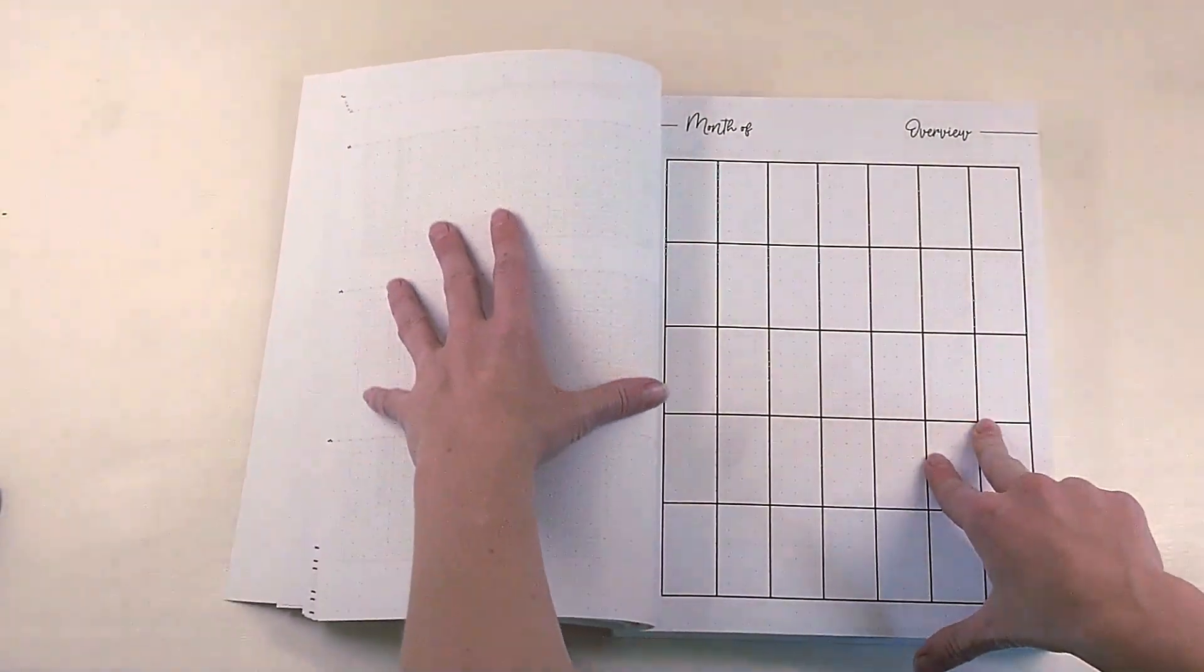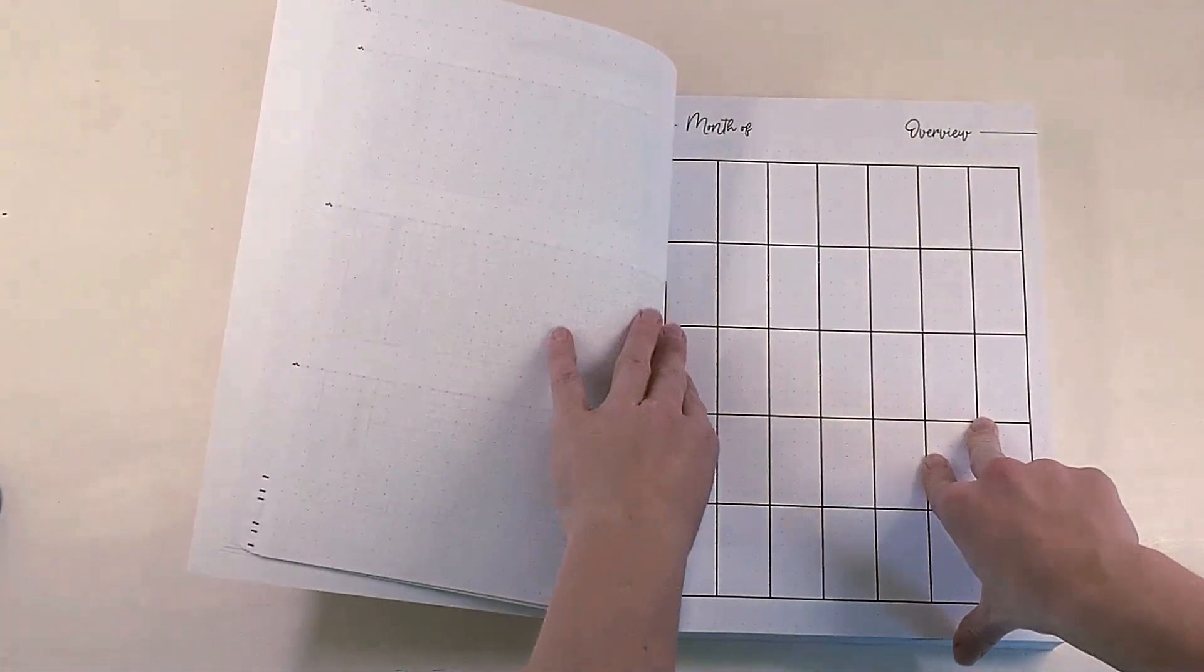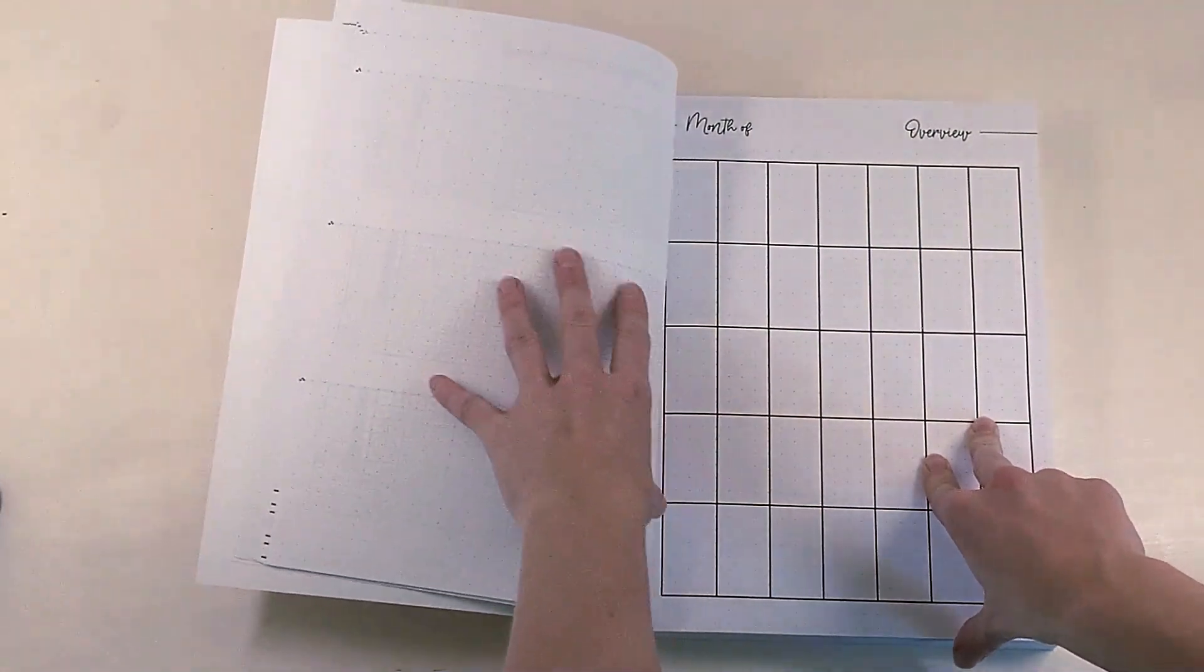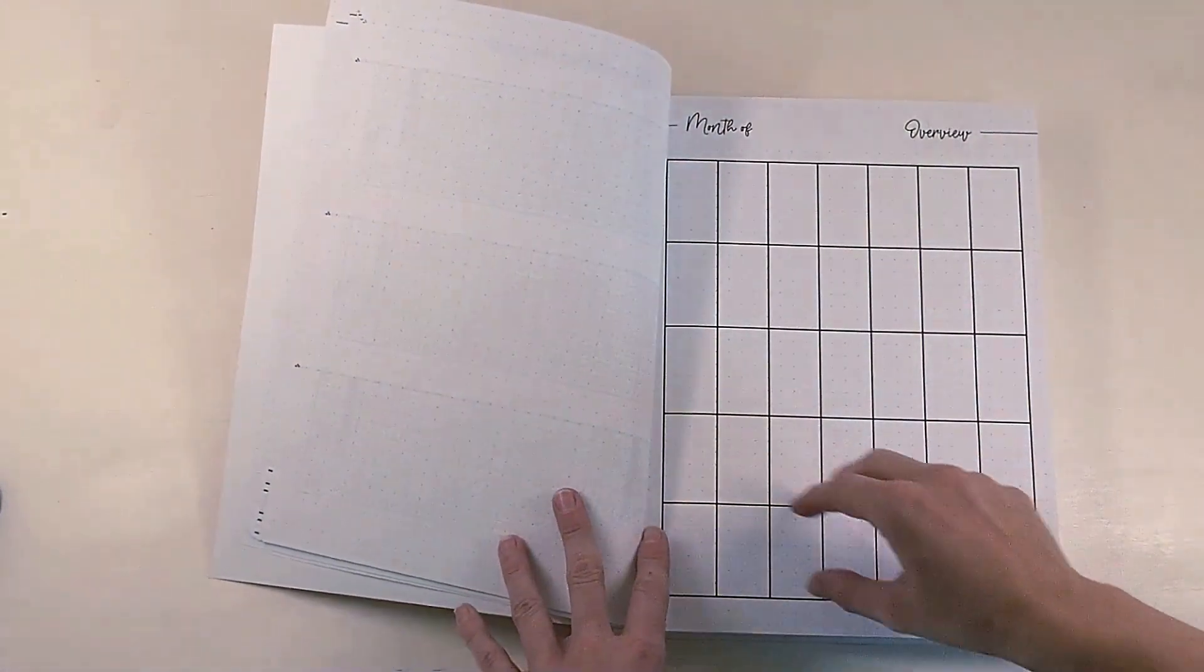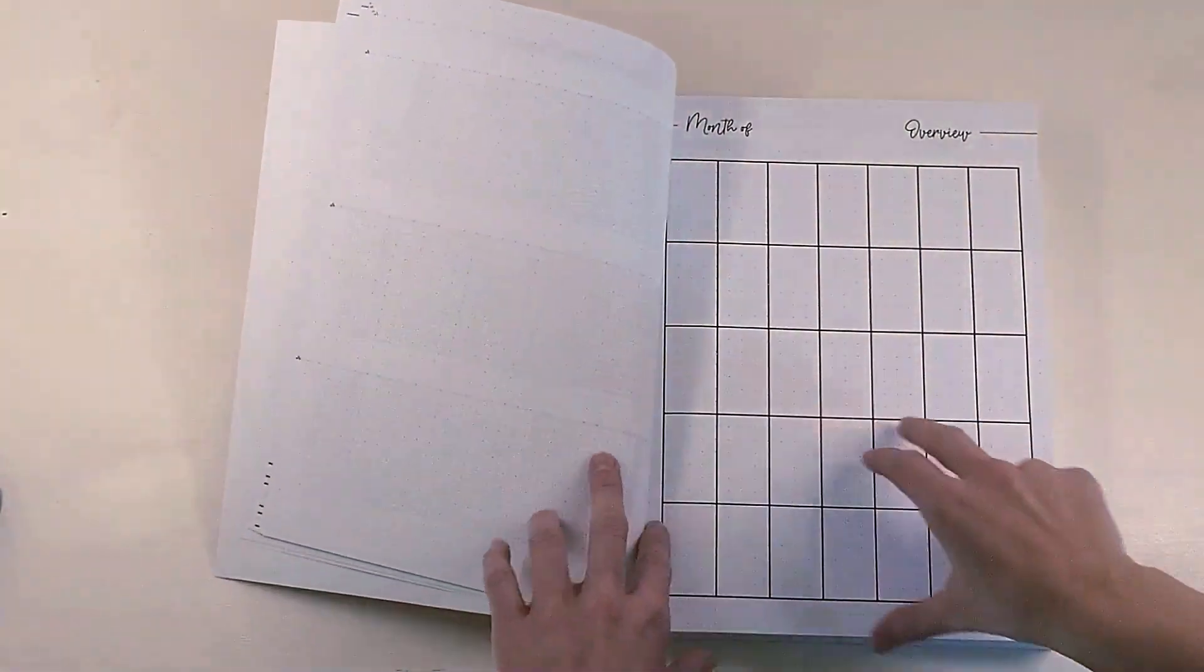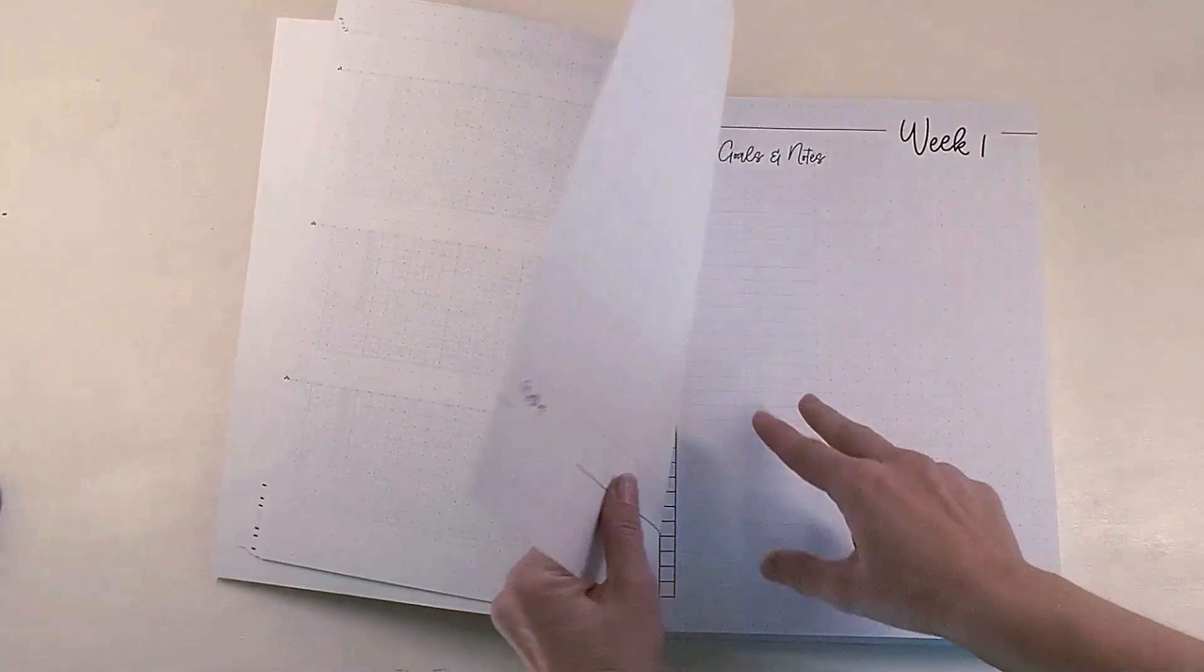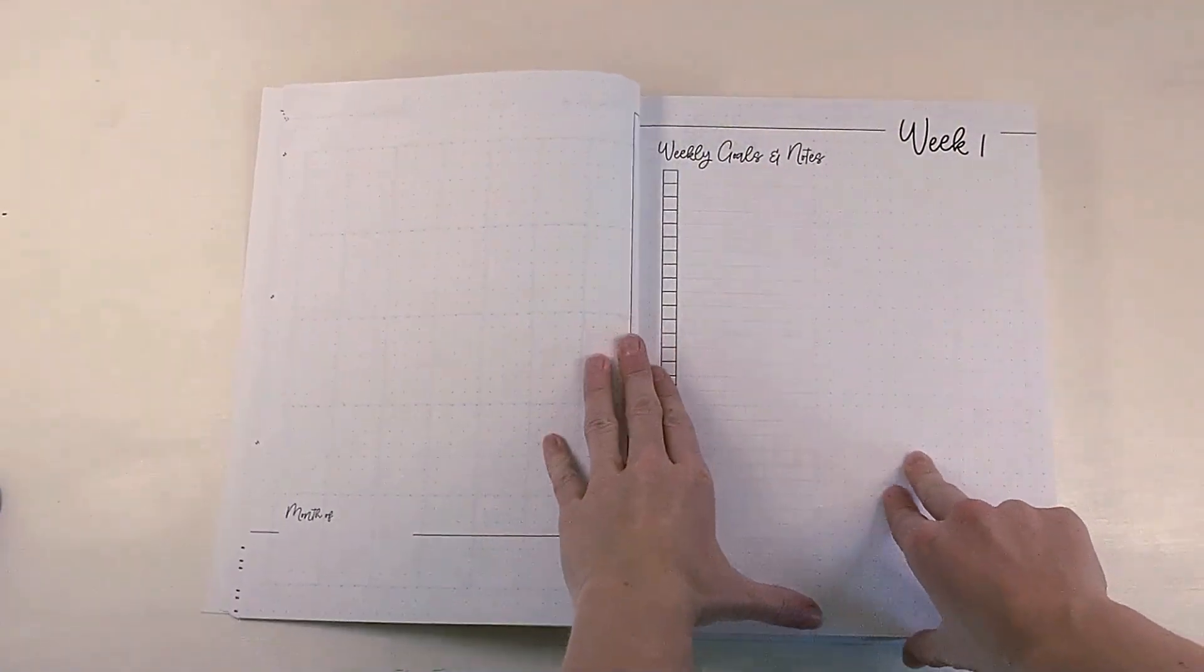And this is cool, too. It's not lined, it's dotted. So maybe if you are more of a mind map or a brainstormer, you can kind of have your notes spread out instead of restricted to just the line list format. And same thing with here, we go into the weeks. You have the dotted month notes.